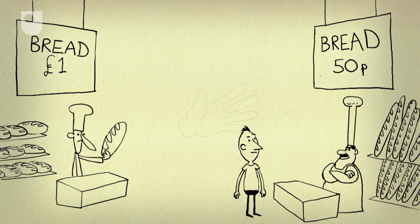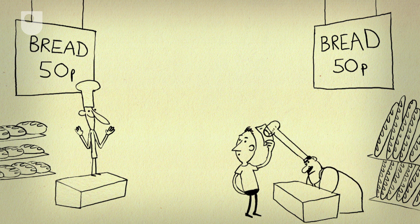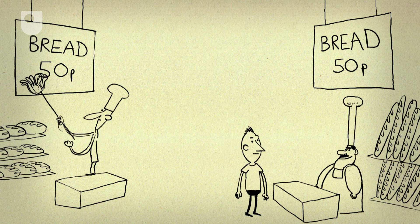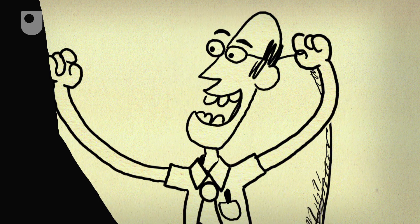If someone charges less than you, customers will buy from them instead, so you'll have to lower the price or offer something better. Whenever enough people demand something, they will be supplied by the market, like spoilt children, only in this case everyone's happy.